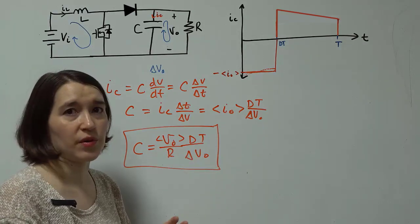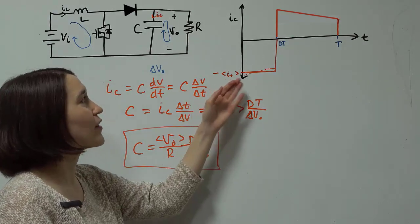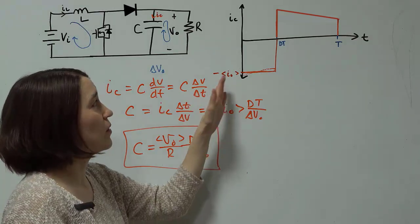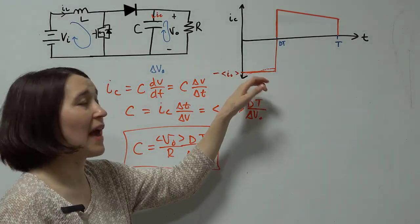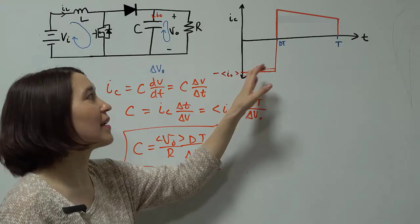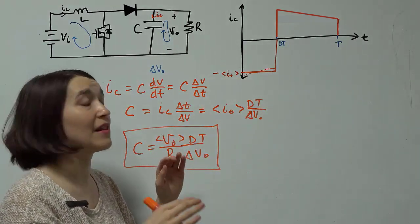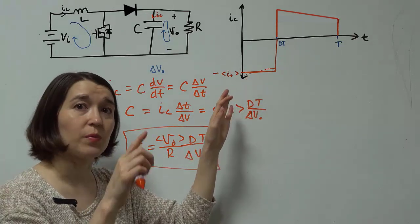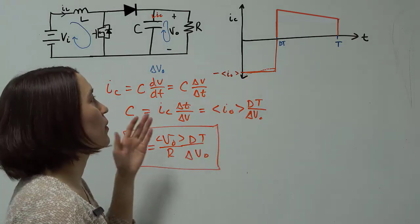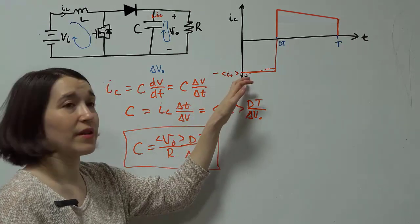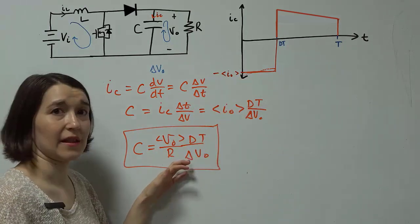But because we're dealing with averages, the average value that's going to come out of that is still going to be the average output current. So we approximate that as the average value, and we do not do all the integration of the slight change in the output current. So it is there in the waveform, there will be some difference in reality. But when we're doing the calculation, we will simply use the average value and calculate it like this.